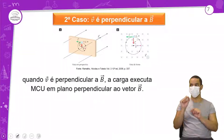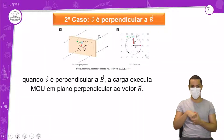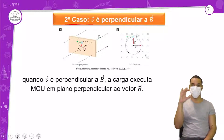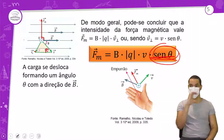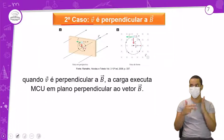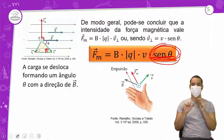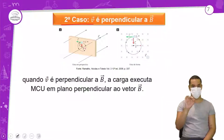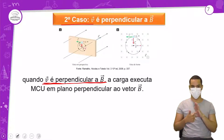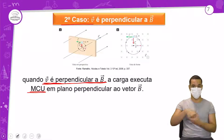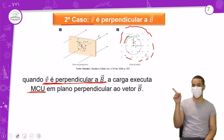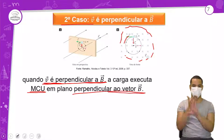Terceiro caso: a velocidade é perpendicular ao campo, que é o segundo caso. Tudo que é perpendicular forma um ângulo de noventa graus. Seno de noventa não é zero, então nós temos força magnética. Quando V é perpendicular ao campo, a carga executa um movimento circular uniforme em um plano perpendicular ao vetor B.